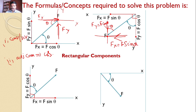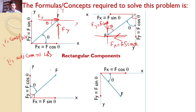For the last case, there is a force F which makes an angle theta with the x-axis. Since F is divergent, the component forces are also divergent. Since the force makes an angle theta with the x-axis, the x-component becomes cos and the y-component becomes sine. So Fx equals F cos theta and Fy equals F sin theta. These are the rectangular components.